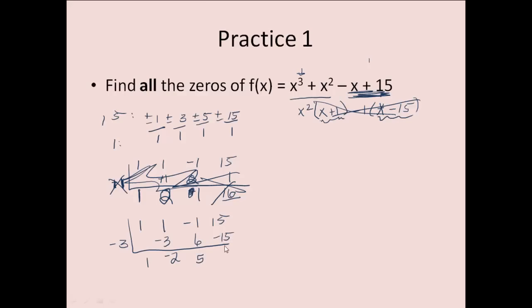And it looks like we do have one. Since we got a zero for our remainder, we have found one of our zeros. Now remember, we do the synthetic division because this gives us a simpler equation to work with. I'm going to have 1x^2, because remember you drop your degree once, -2x + 5.